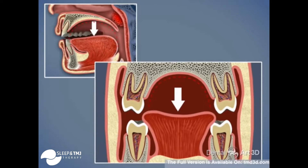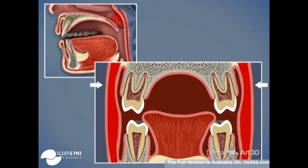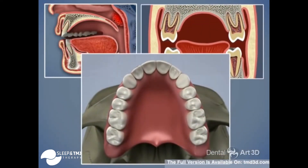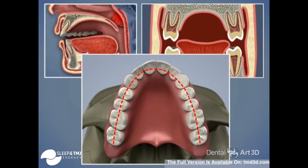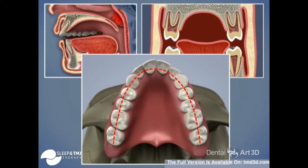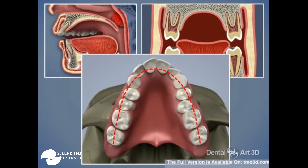Nasal breathing is the correct way for air to enter the body. During nasal breathing, the tongue rests at the palate and the pressure of the cheeks is balanced by the tongue. During mouth breathing, the pressure from the cheeks is unopposed by the tongue. The oral system becomes unbalanced and results in the deformation of the upper jaw, creating a V-shaped arch as opposed to a correct U-shaped arch.